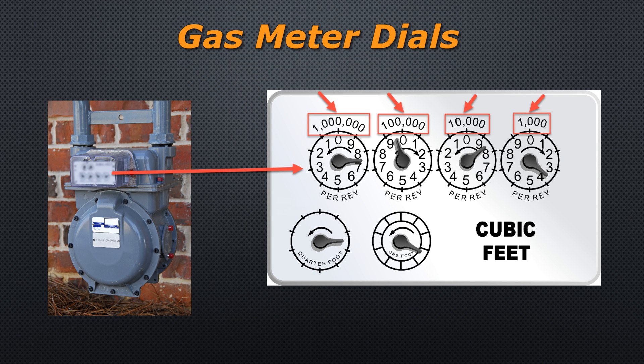Upon closer inspection you'll notice that there are six dials, with indicators rotating in counterclockwise and clockwise directions. The dials we're concerned about in this picture have 1 million, 100,000, 10,000, and 1,000 above them.